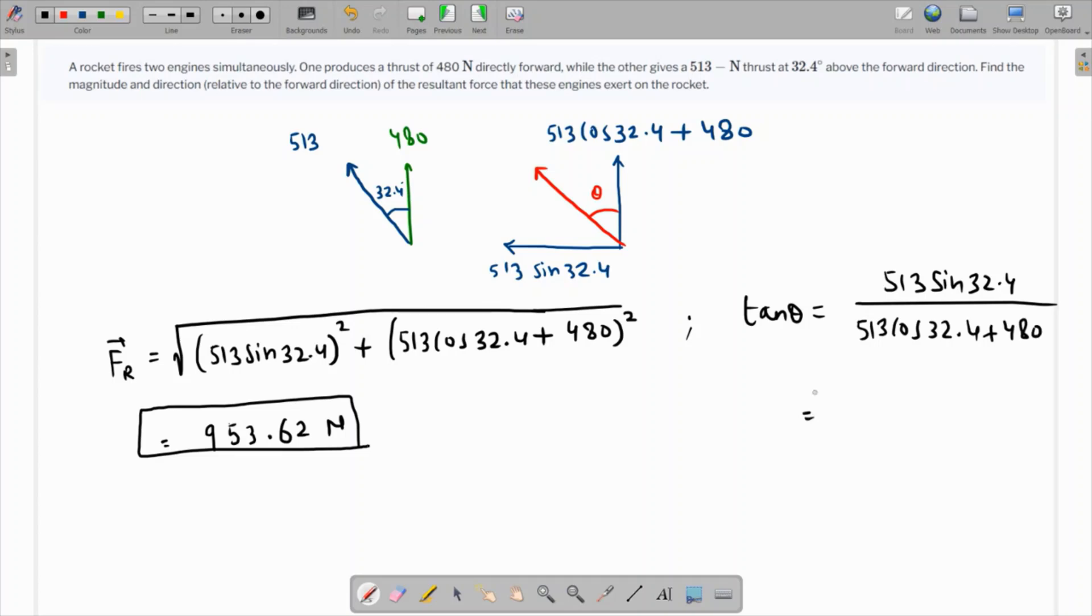So this is now 513 times sine 32.4 over 513 times cos 32.4 plus 480. Tan inverse of this is coming as 16.75.